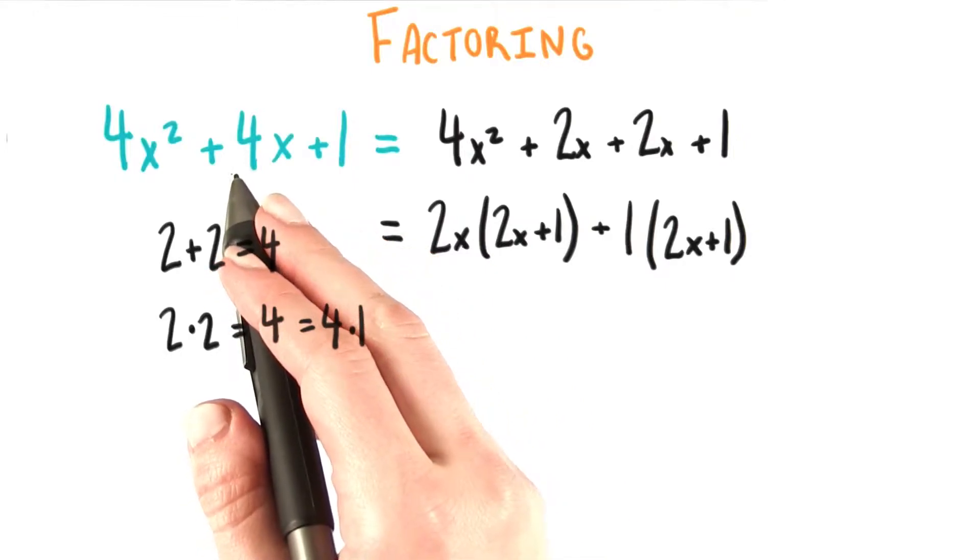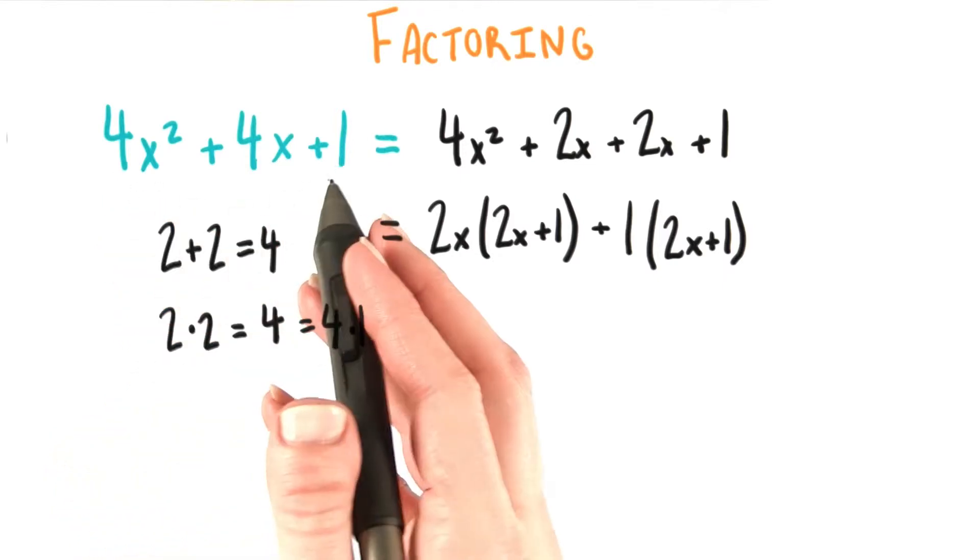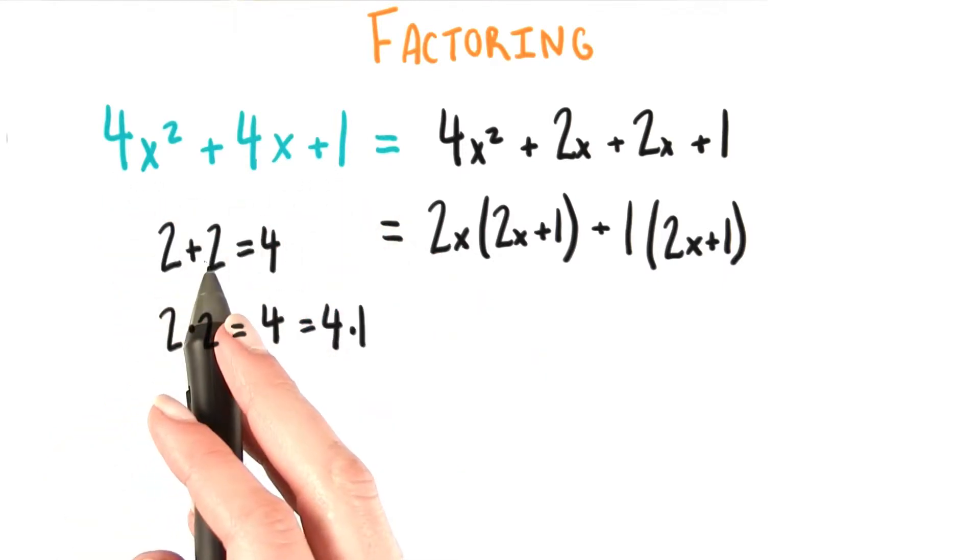The first thing we need to do, as always, is think about what adds to equal 4 and multiplies to equal 4 times 1, or 4. In this case, our numbers are 2 and 2.